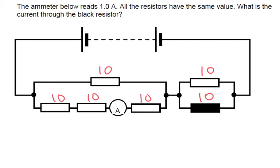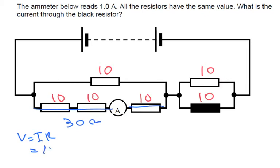What we can do firstly is think about this line here. 10 plus 10 plus 10 makes 30 ohms. So by V equals IR, the voltage across here is going to be the current of 1 times by 30, which equals 30 volts.